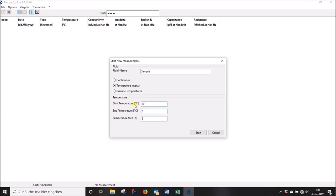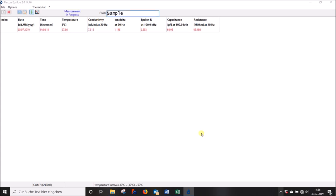Please note that only one value is determined at each of these temperatures. If you're looking for multiple values, use the discrete temperatures mode. Eventually click on Start to run your measurement.